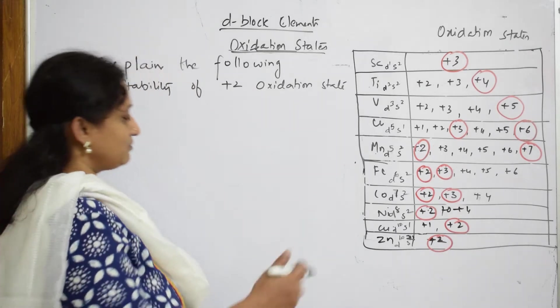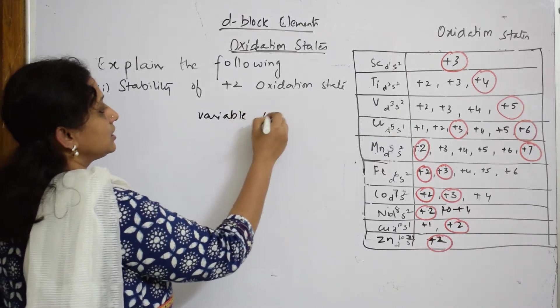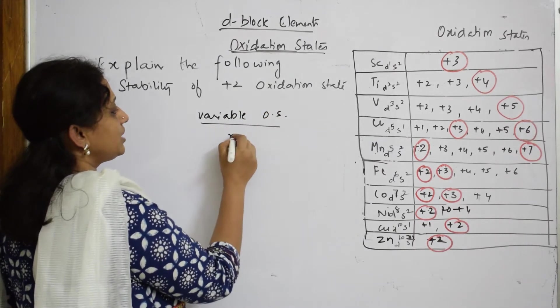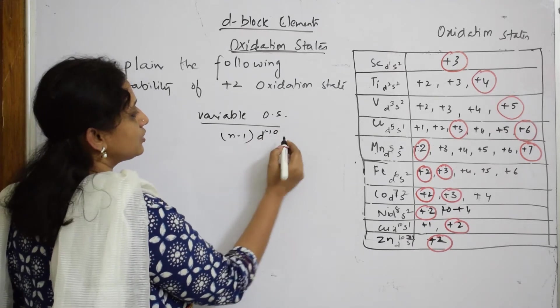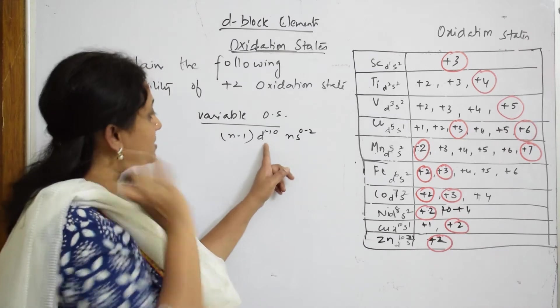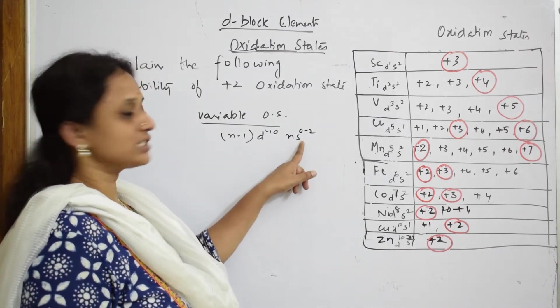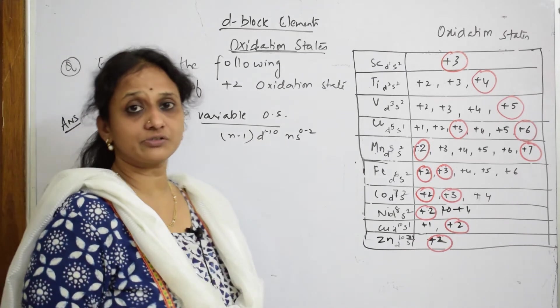Now we have n-1 d 1 to 10 and your n is 0 to 2. Because of this presence of d, first it removes electrons from here. After that, it has also the possibility of removing electrons from d. That's the reason it's going to show variable oxidation state.